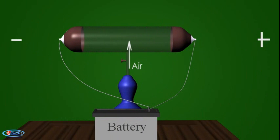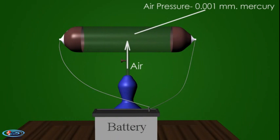When the pressure of air in the discharge tube is reduced to 0.001 millimeters of mercury and a high voltage is applied to the electrodes, the emission of light stops, but the phenomenon of fluorescence is observed, in which the walls of the discharge tube at the end opposite to the cathode begin to glow with a greenish light.